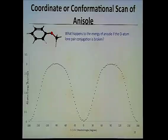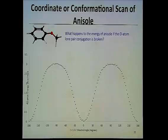We just saw this P orbital lone pair on the oxygen is conjugated to the pi system. I want to explore that further. What happens if we change the structure of the methoxy group by rotating it relative to the aromatic ring? I'd like to look at what happens to the energy of the structure — we're going to do something called a conformational scan to see that. At the same time, we'll look at the structure of anisole and make sure there aren't other conformational isomers that could be lower in energy than the one we obtained.